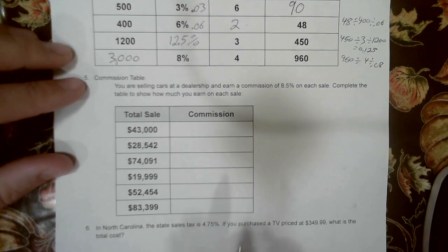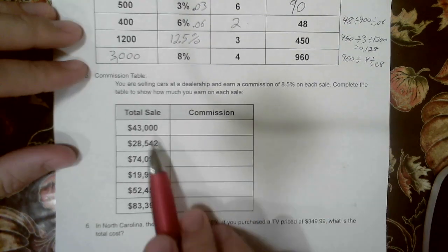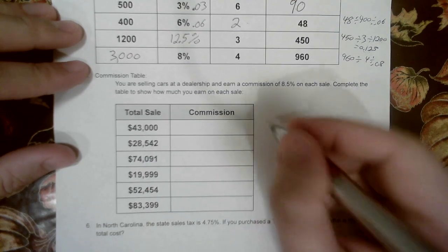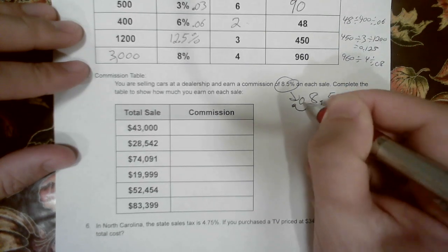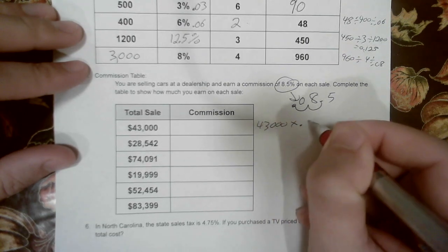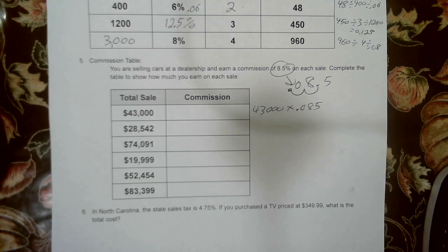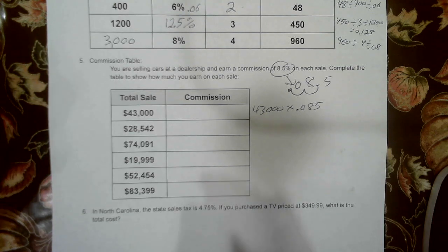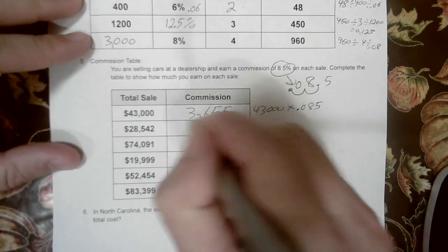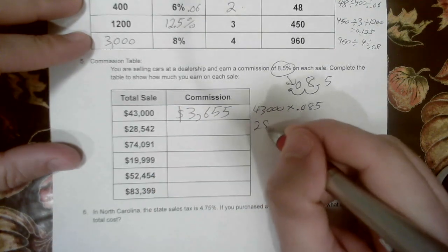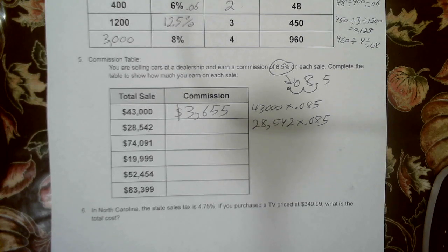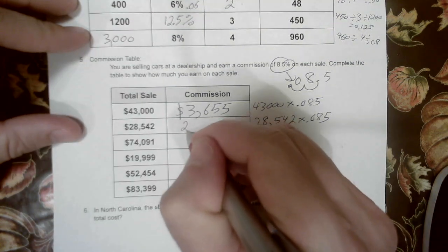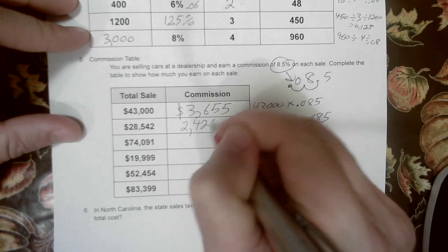Let's check out commission. Remember, commission is a percent that you earn based on what you sell. So if I sold this car for $43,000, I would earn this much money. Before I do this: 8.5, move two to the left, fill in the gap with a 0 — I've got to do 43,000 times 0.085, and I get $3,655. Try the same here, and I get $2,426.07.